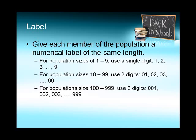For population size 100 to 999, you're going to use three digits. It's important that you give the right length label.